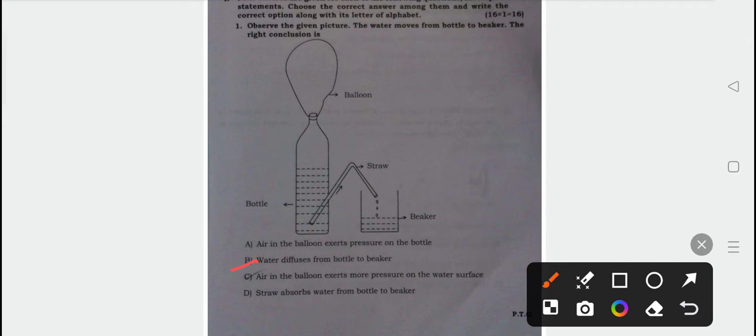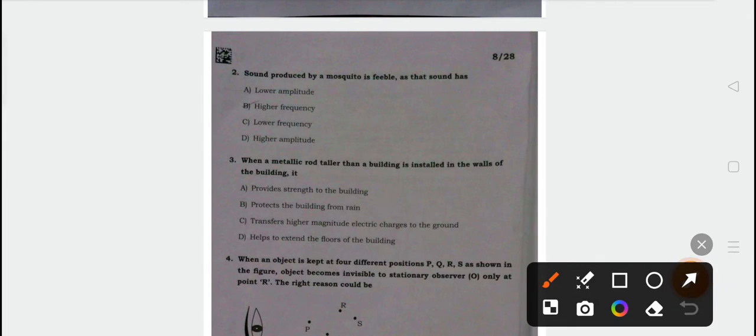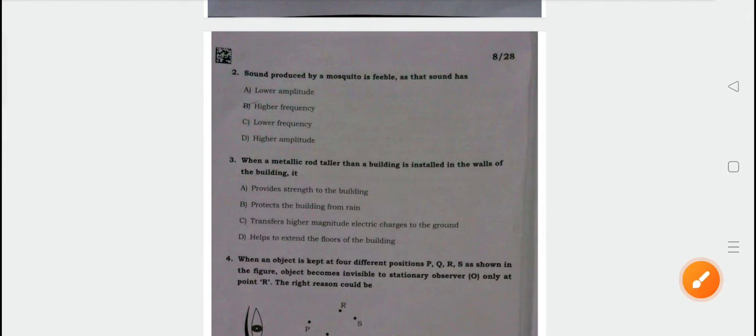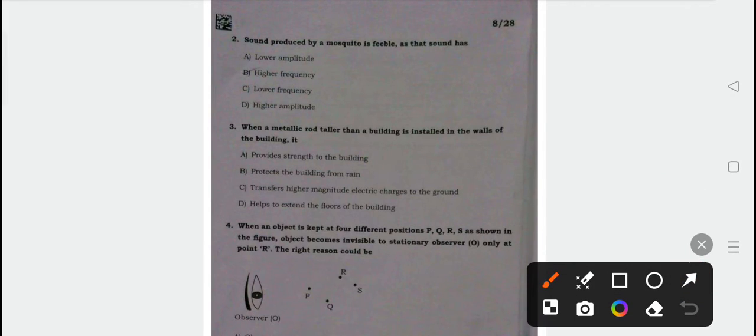Next question: Sound produced by a mosquito is feeble. The correct answer is option C, lower frequency. Option C is correct answer. When a metallic rod taller than a building is installed in the walls of the building, option C, transfer of higher magnetic electric charge to the ground is the correct answer.